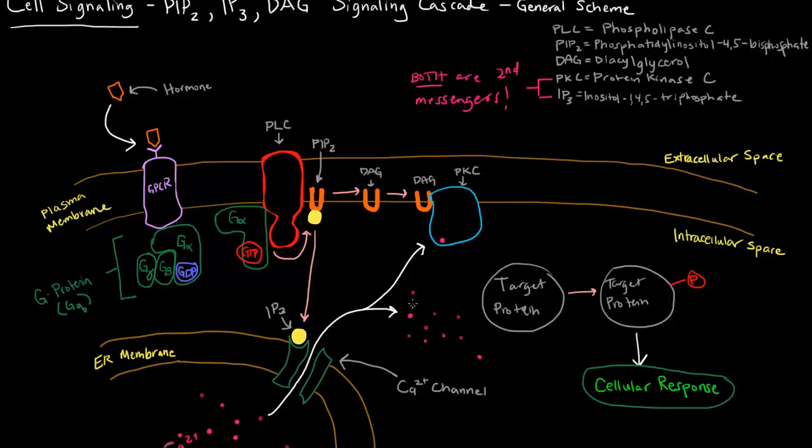So these calcium ions help DAG activate protein kinase C. The calcium ion and the DAG both work together to activate protein kinase C, and once protein kinase C is activated, it triggers the phosphorylation of that target protein, or a particular target protein, and that triggers a cellular response.